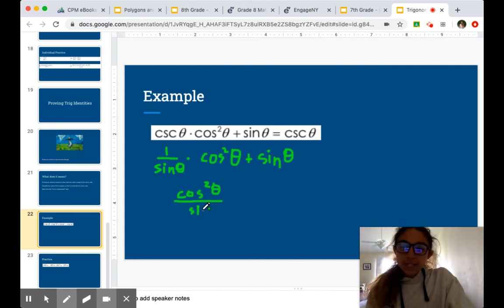And the reason I want to do that is I'm getting ready to combine my fractions. Because the next step in our simplifying trig expressions is to either use a Pythagorean identity or to look for a way that we can create one that we can use.